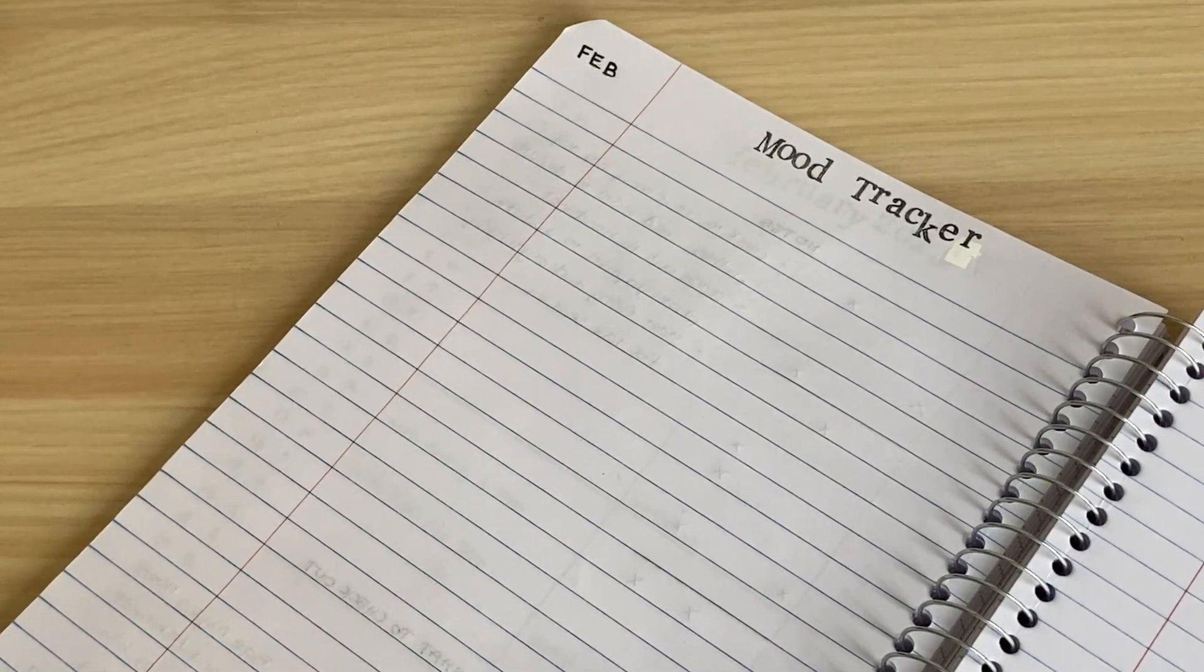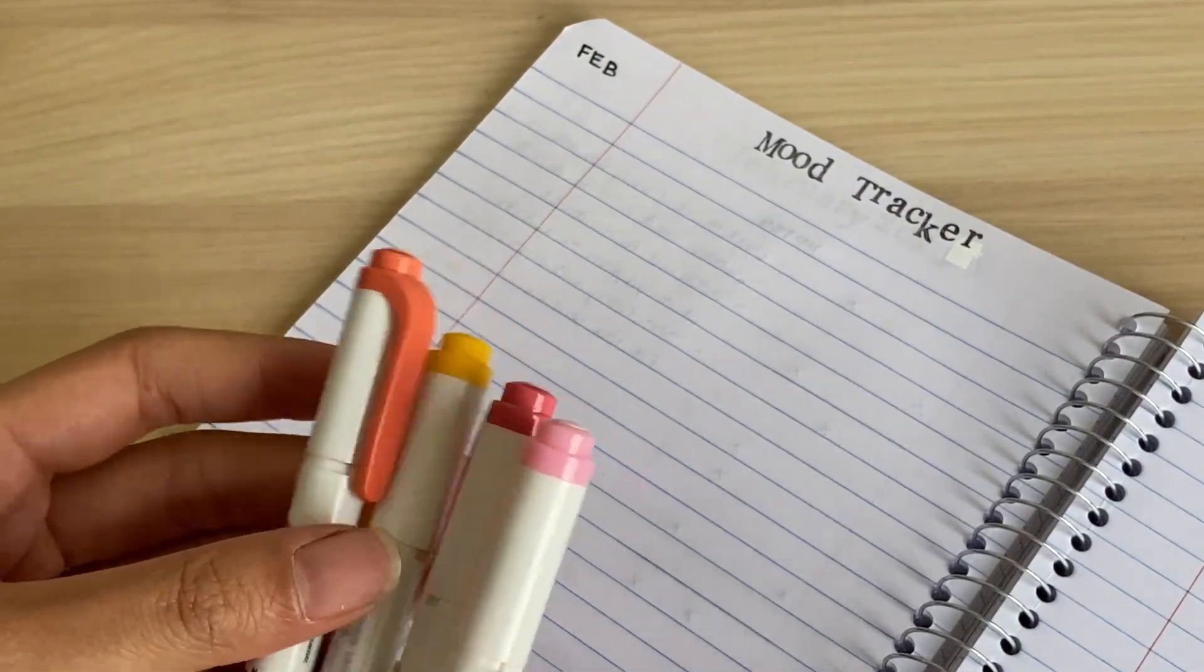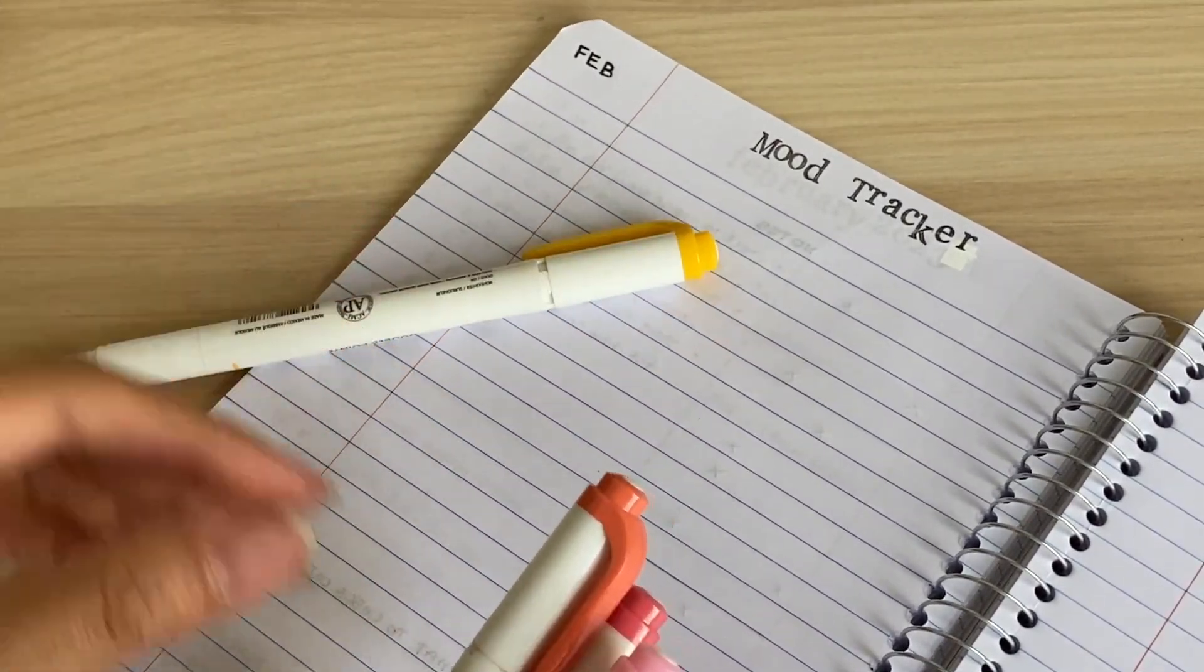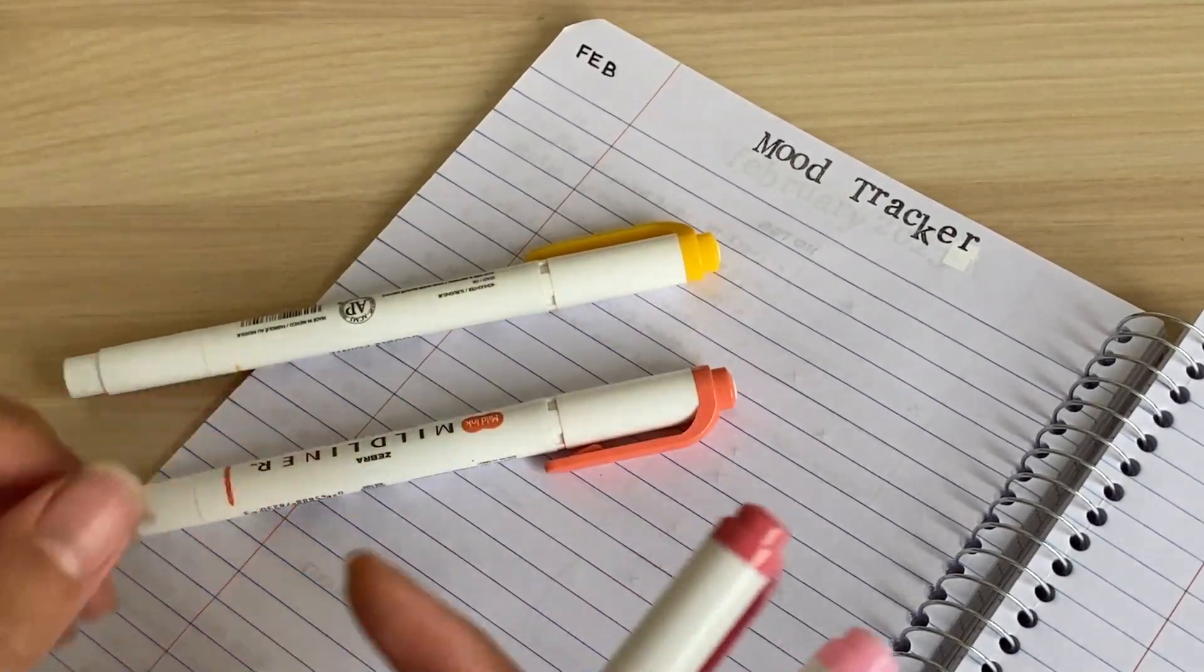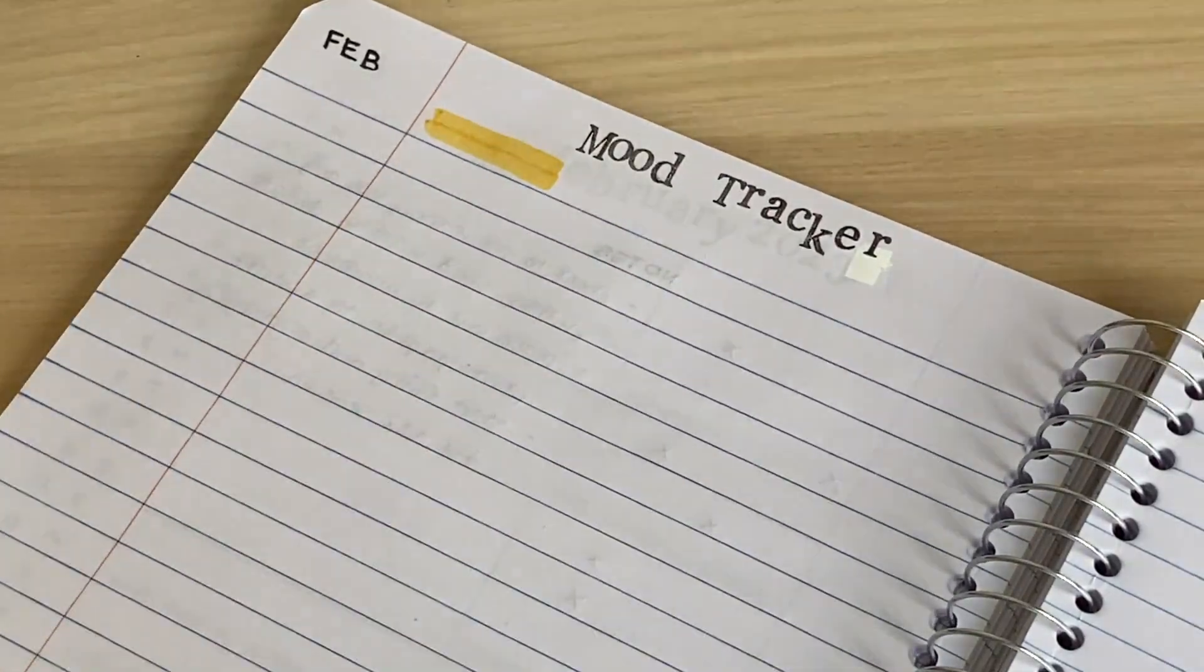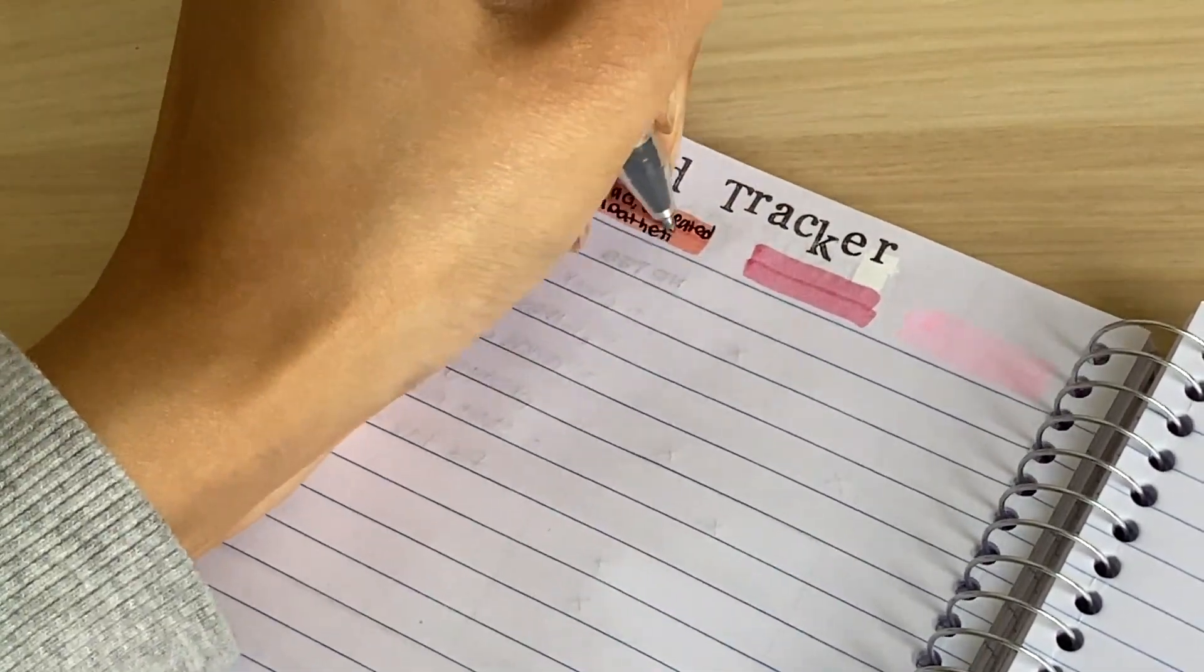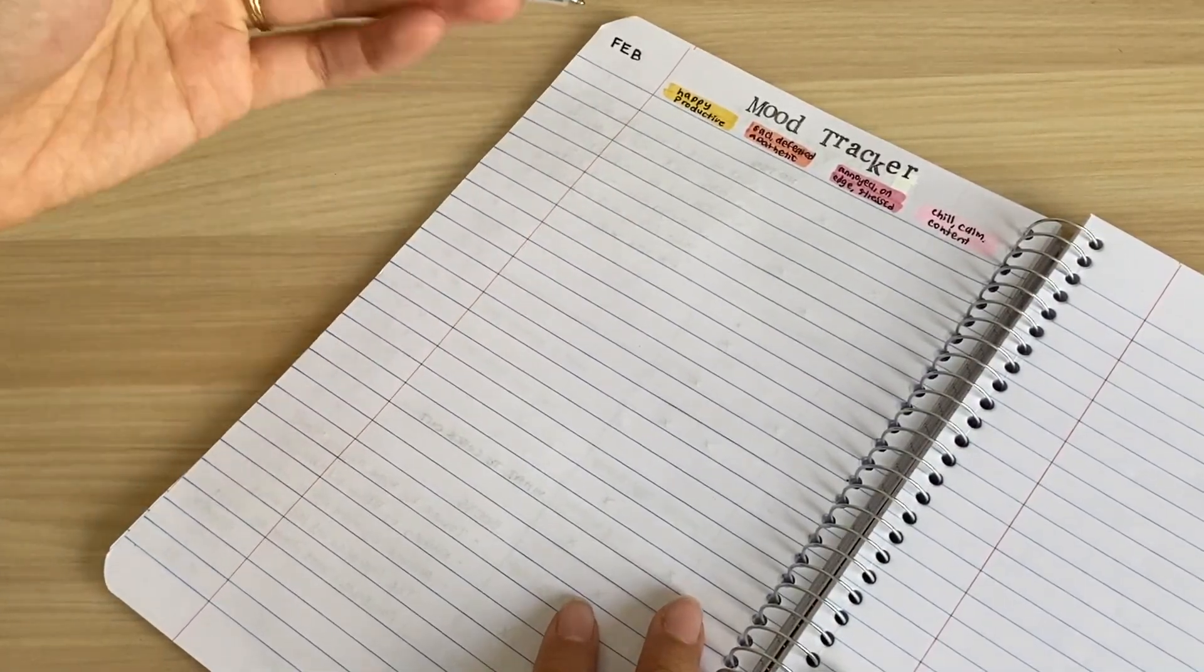The next thing we're going to do is create a legend or a key for the various emotions and moods that you will feel throughout the month. I've chosen four colors. We're going to have yellow as happy, content, productive; orange as sad or defeated or apathetic, sluggish; red for annoyed, on edge, stressed out; and pink for chill, calm, and satisfied.